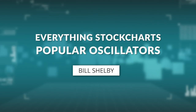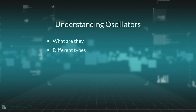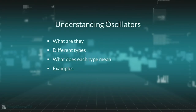There are a number of oscillators for measuring momentum on the site, and they're broken into a couple of different flavors. We're going to discuss what an oscillator is, go over the two camps they fall into, how you can tell by looking at the chart which one it is, and what each camp attempts to do. They do different things and can be used differently.